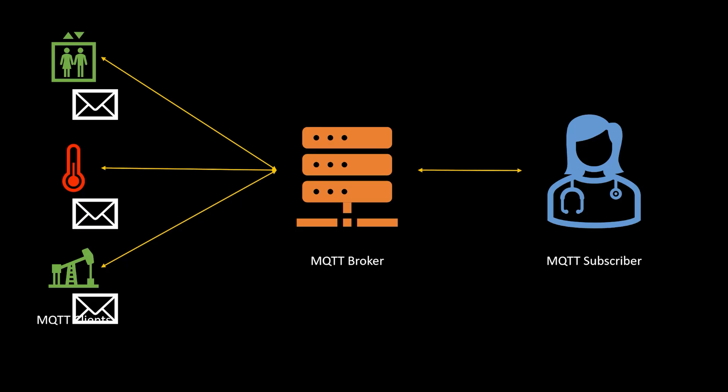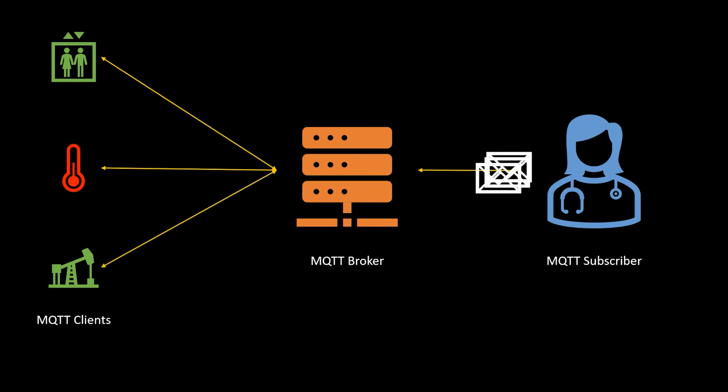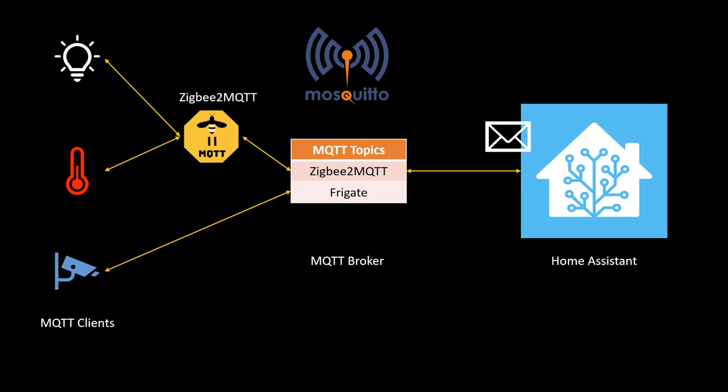Zigbee2MQTT is a piece of software that lets you control and manage Zigbee devices using something called MQTT. MQTT is a lightweight messaging protocol that passes messages between devices. For example, you can have a temperature sensor that tells the MQTT broker how hot it feels every time the temperature changes. The MQTT broker records this, and if any other devices want to know what the last temperature reading is, they can ask that broker. Other devices can also subscribe to a topic or device, which means the MQTT broker will notify that device whenever a new temperature reading is received. You can also publish messages directly to the broker to tell devices to do things like turn a light on or make it blue.